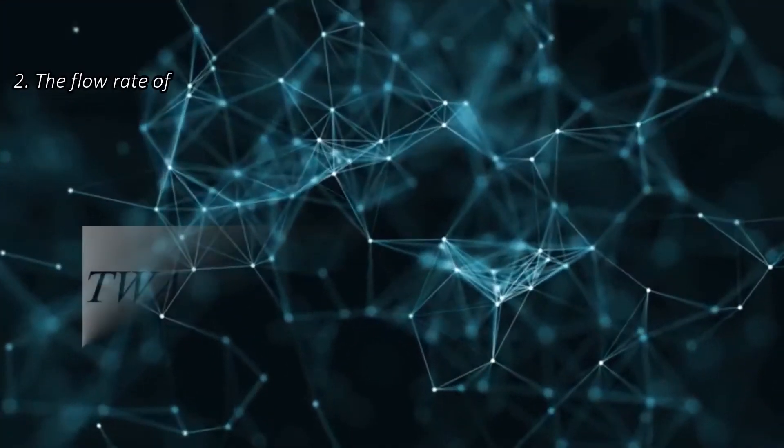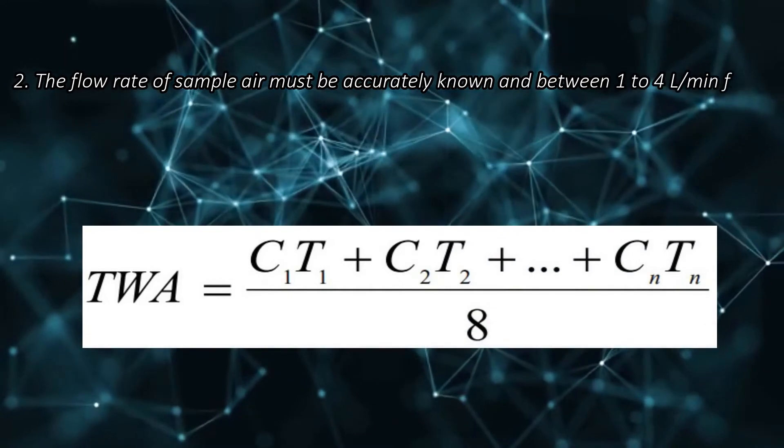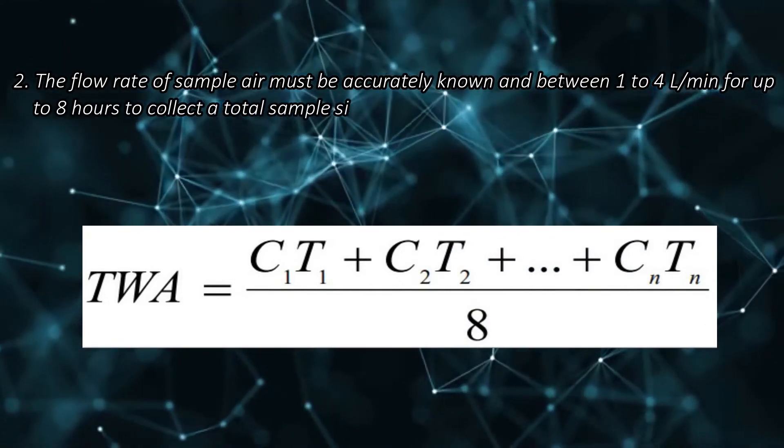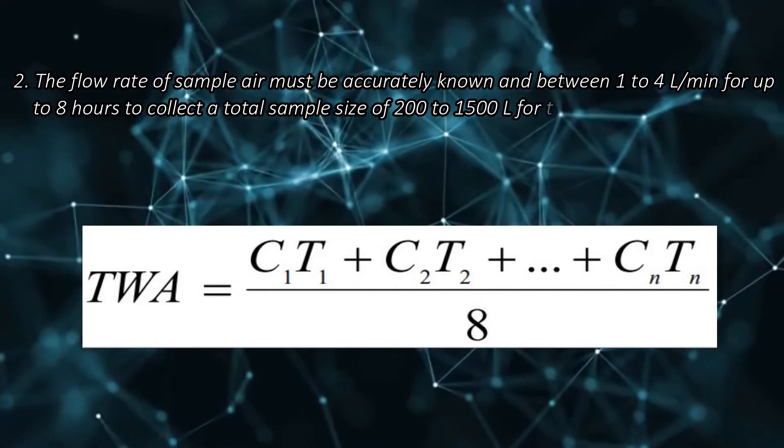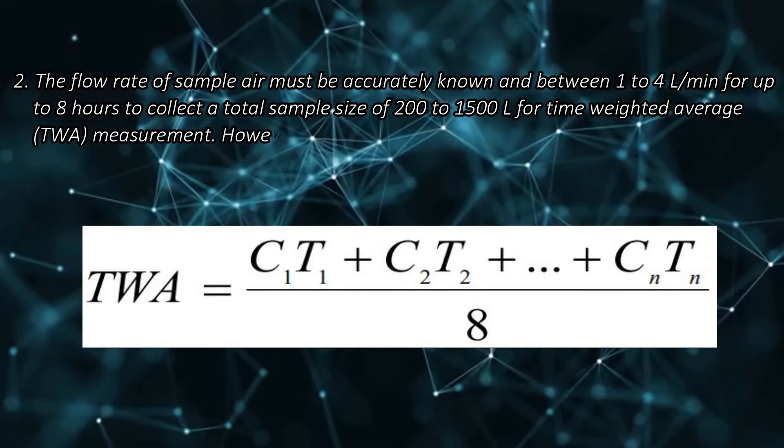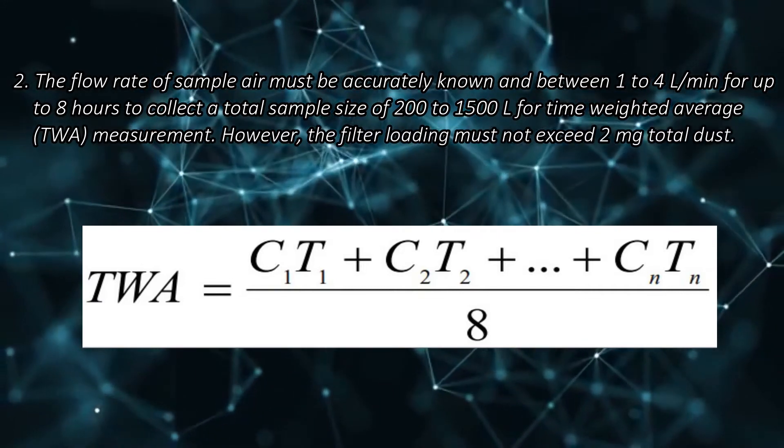The flow rate of sample air must be accurately known and between 1 to 4 litres per minute for up to 8 hours to collect a total sample size of 200 to 1500 litres for time weighted average TWA measurement. However, the filter loading must not exceed 2 milligrams total dust.